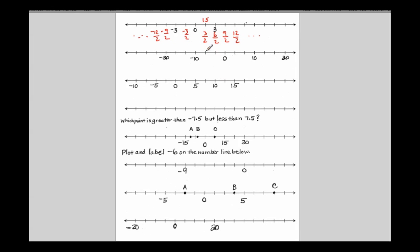We want to determine the value of what each point is worth. We first have to start at 0 and see that it's a length of 10 being partitioned into 1, 2, 3 equal pieces. So each one of these is 10 thirds, or 3 and 1 third. Then it would be 20 thirds, 30 thirds, and 30 divided by 3 is 10 — so we know this is correct. That means this would be negative 10 thirds, negative 20 thirds, negative 30 thirds, and 30 divided by 3 is 10, and taking the opposite of that is negative 10. That's why it works out.